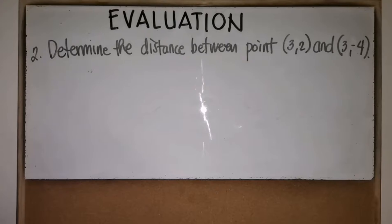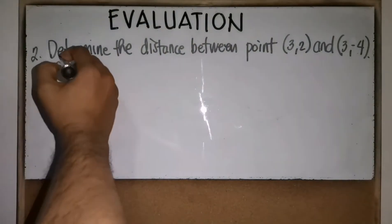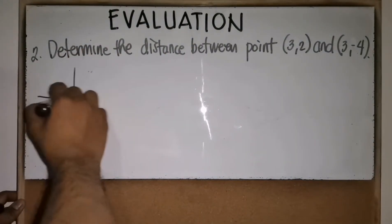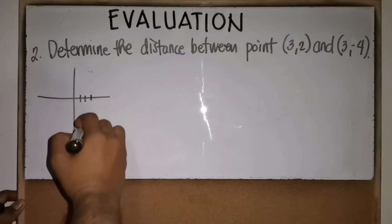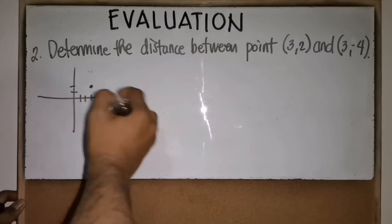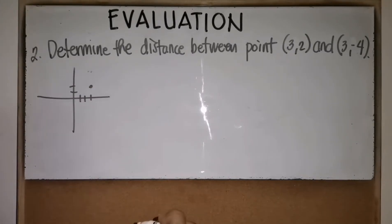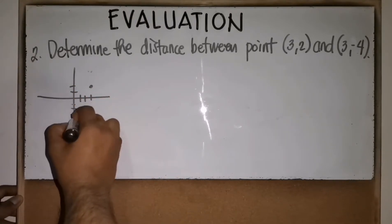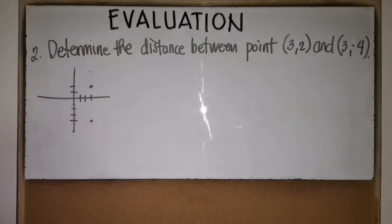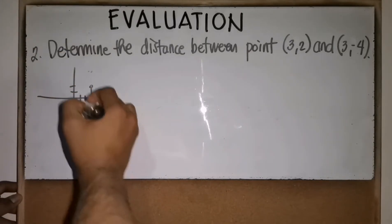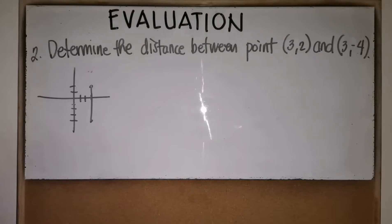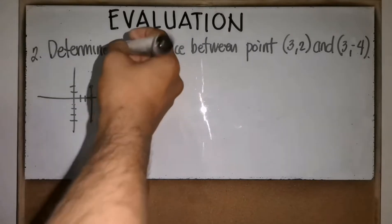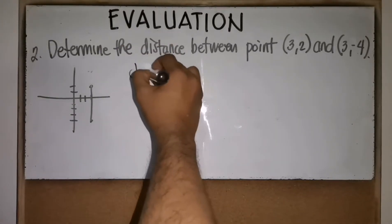Number two: determine the distance between point (3, 2) and (3, -4). To visualize, we draw the coordinate plane. Point (3, 2) is at this location, while point (3, -4) is four units below the x-axis. We will use the distance formula to find the distance between these two points.